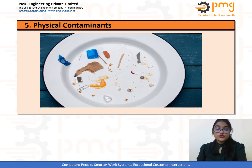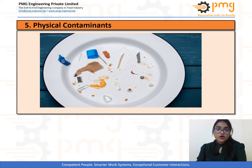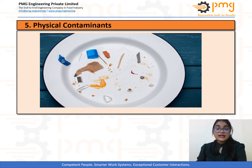Let us now move on to our next category: physical contaminants. These are either foreign materials unintentionally introduced to food products, or naturally occurring objects that are hazardous to consumers. Common sources include glass, metal, plastic, stones, and wood. A physical hazard can contaminate a food product at any stage of production, and therefore food processors should take adequate measures to avoid physical hazards in food.